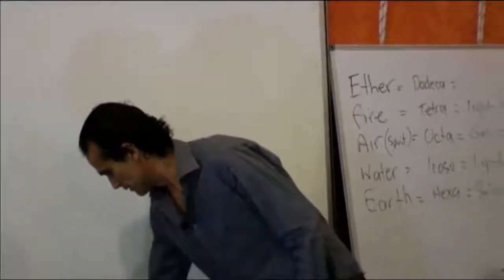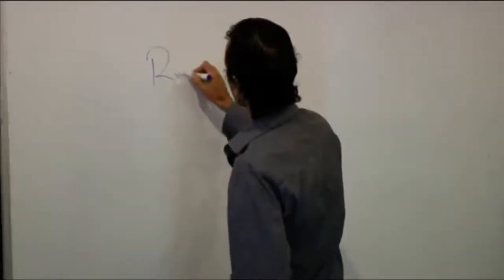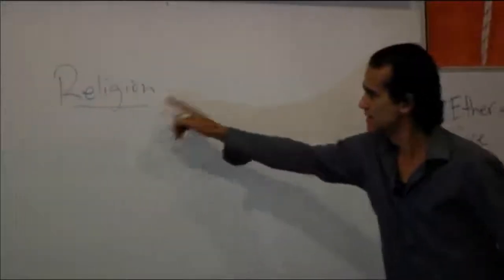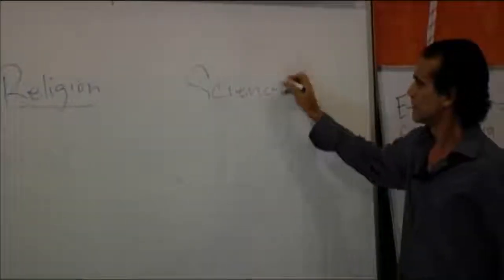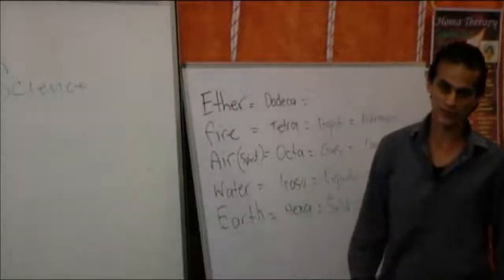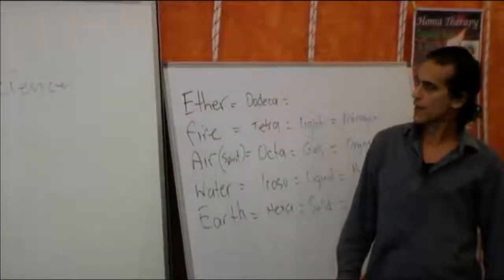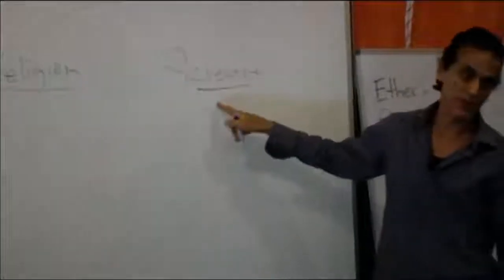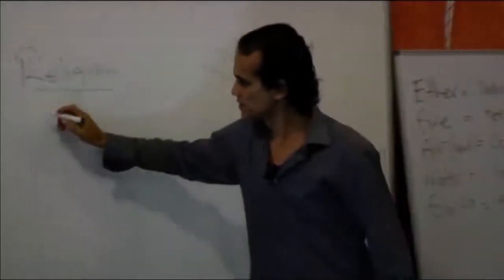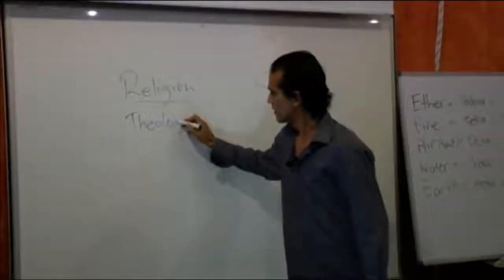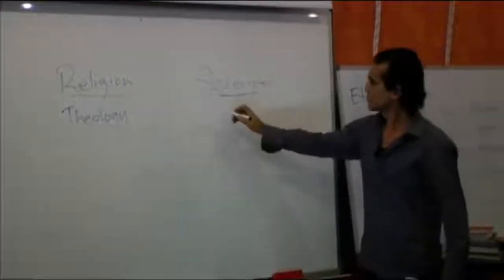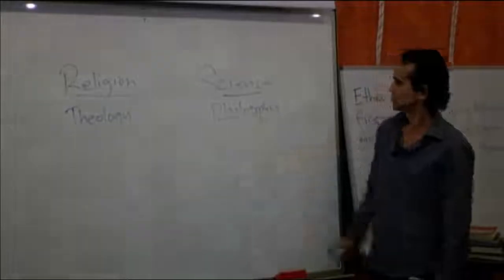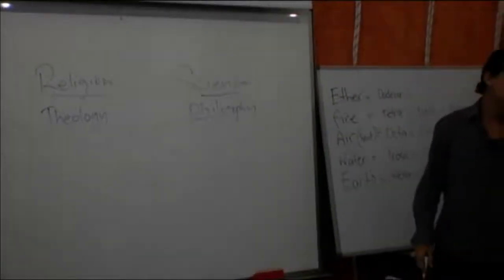Now, true religion? Religion has had a war for the last few thousand years against science, has it not? There's always been this war. And the religionists have persecuted many, many scientists. Under religion, we have theology. Under science, we have philosophy.